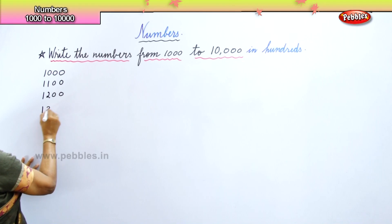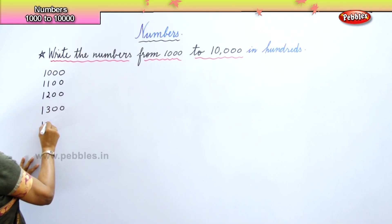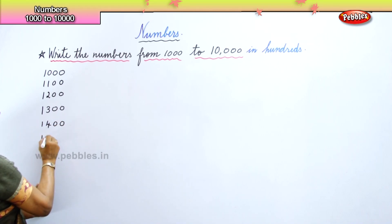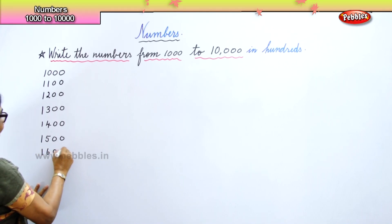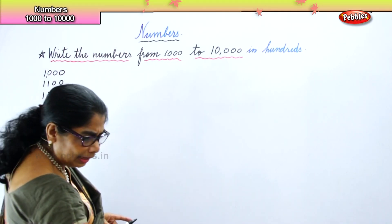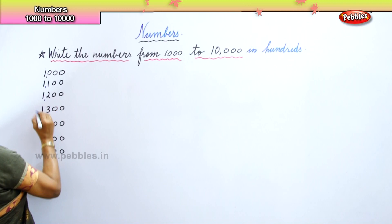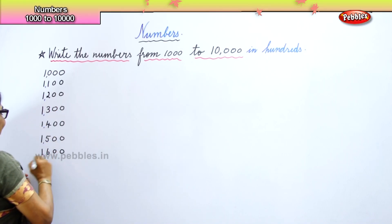One thousand two hundred. One thousand three hundred. One thousand four hundred. One thousand five hundred. One thousand six hundred. Now, for thousands, you must put one tiny little comma to separate hundreds.